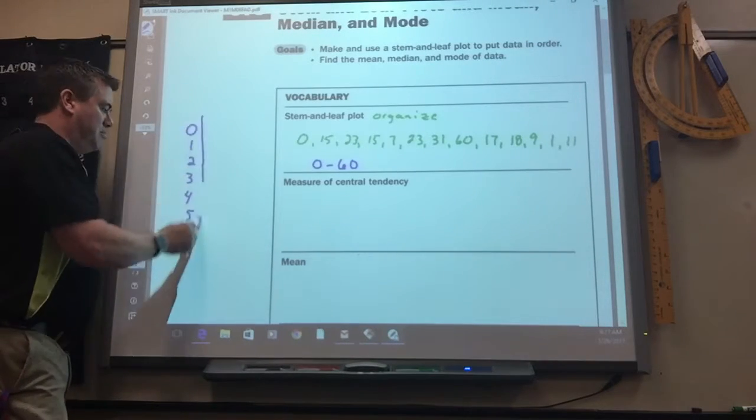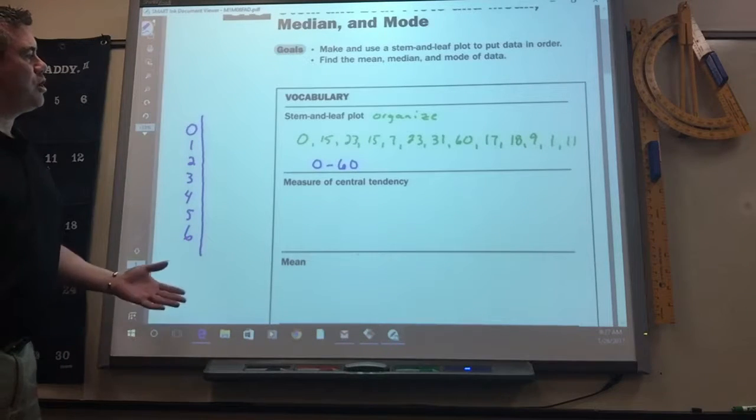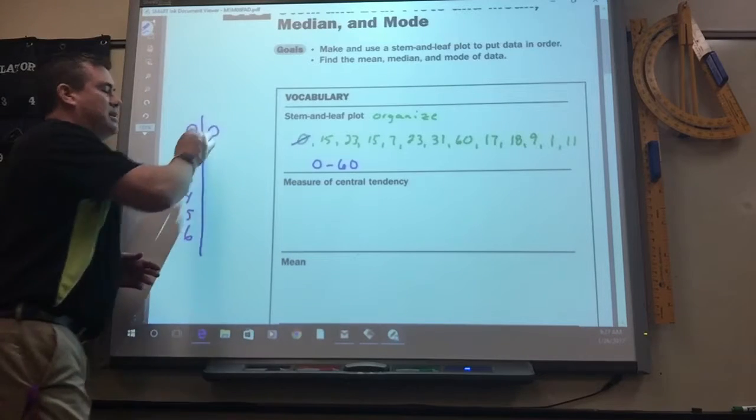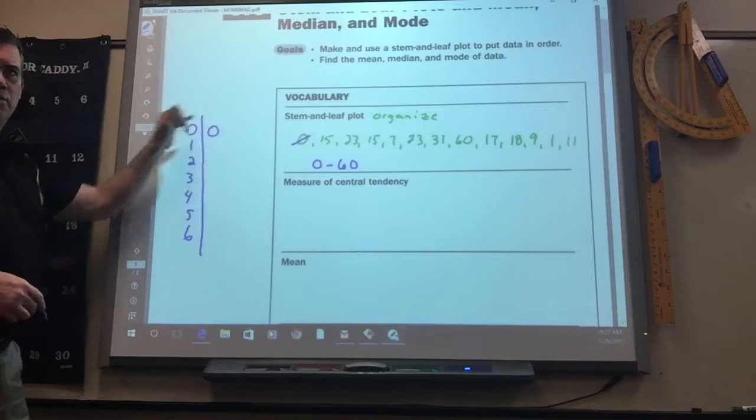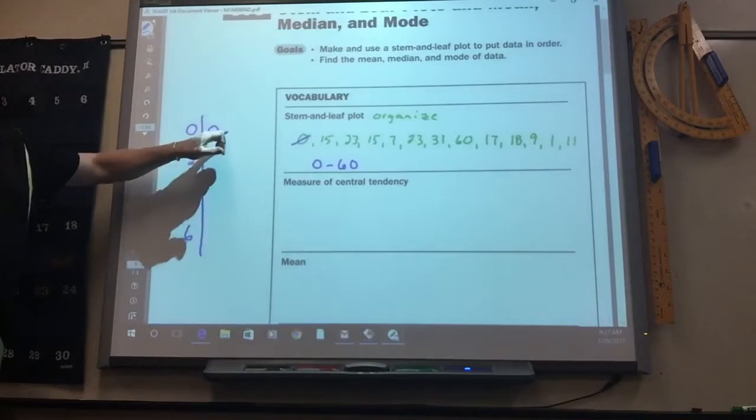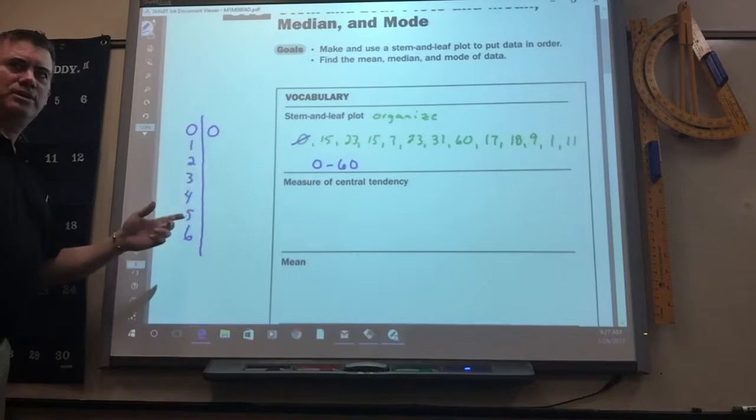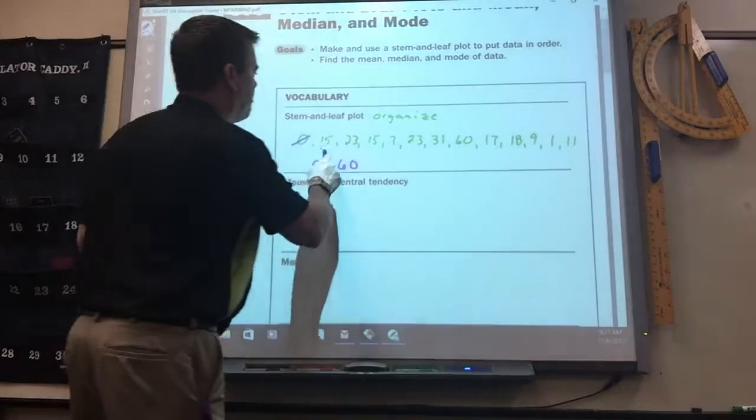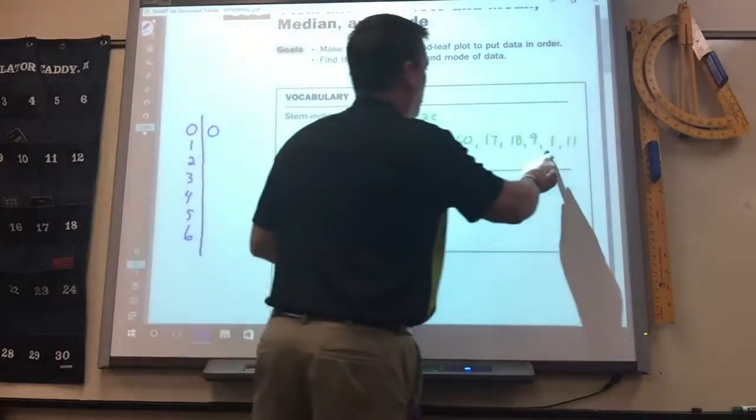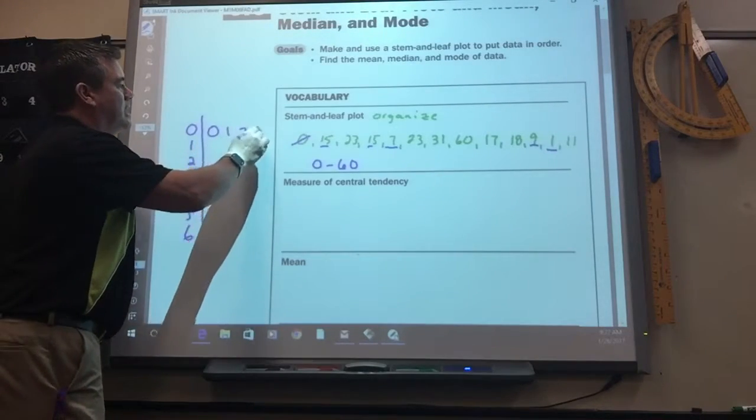That's the stem and then you put a line, and then you just put them in order. So the smallest number is a zero, so I've got to put that in a zero column or row. And then the other, what this means is it's the ones digit. There is nothing in front of it. These are teens, 20s, 30s. So we've got a 15, no, a 7, a 1, and a 9. So I'd put the 1, 7, 9.